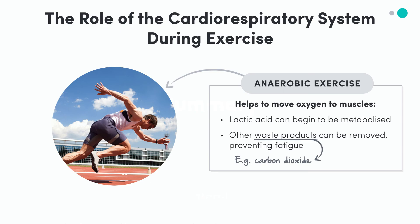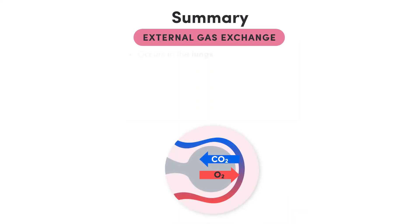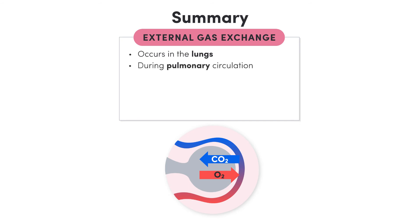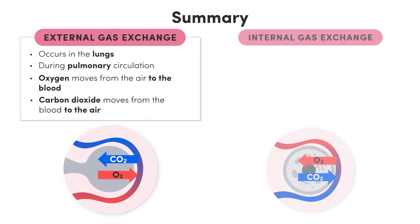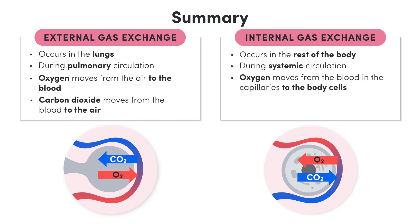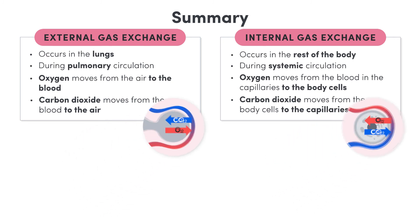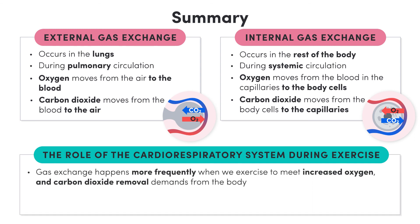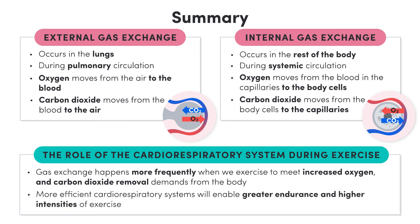So there are two types of gas exchange. External gas exchange occurs in the lungs during pulmonary circulation — here, blood loses carbon dioxide and gains oxygen as it travels through the capillaries around the alveoli. Internal gas exchange occurs in the rest of the body during systemic circulation — here, oxygen moves from the blood in the capillaries to the body cells whilst carbon dioxide moves from the body cells to the capillaries. These processes occur all the time but happen more frequently when we exercise to meet increased oxygen demands and carbon dioxide removal needs. The efficiency of these processes can influence performance, as more efficient cardiorespiratory systems will enable greater endurance and higher intensities of exercise. And that's it for this lesson.